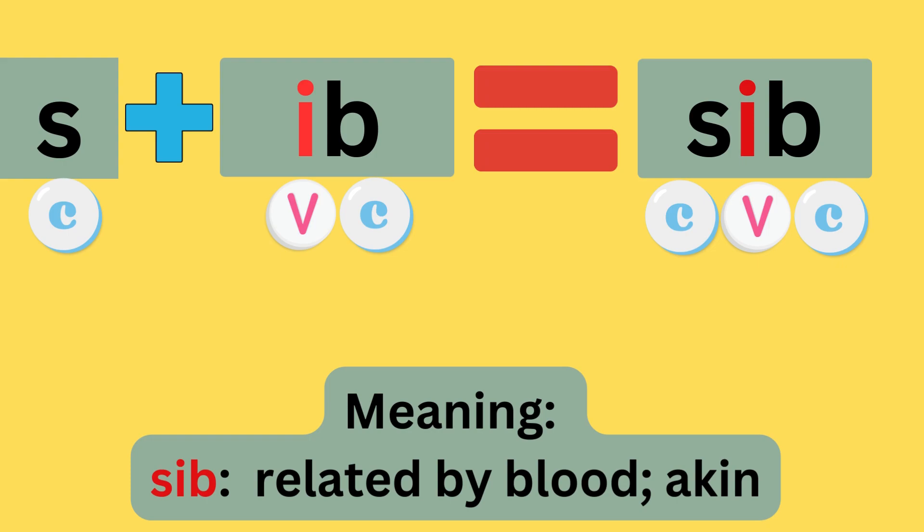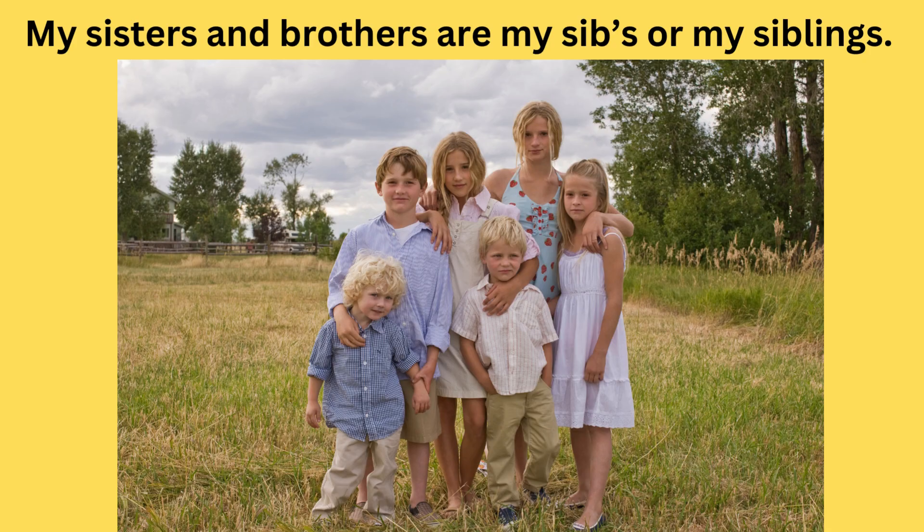S plus -ib equals sib. The sounds are: s-i-b — sib. The meaning is related by blood or kin. My sisters and brothers are my sibs, or my siblings.